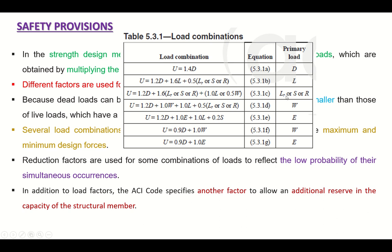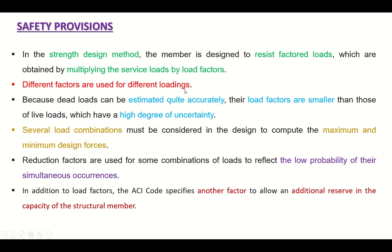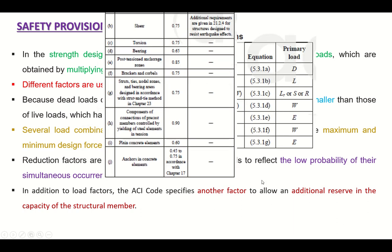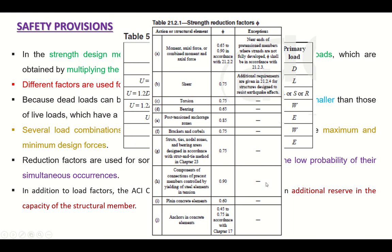Similarly, there are other combinations where the primary load varies. For example, here the primary load is roof live load or the snow load or the rain load. Here it is wind. Here it is earthquake, wind, and earthquake. So these are different load combinations that are used with the load factors and the load combinations.